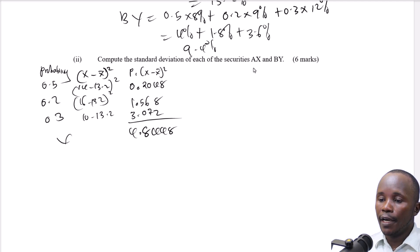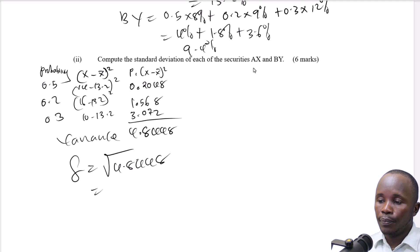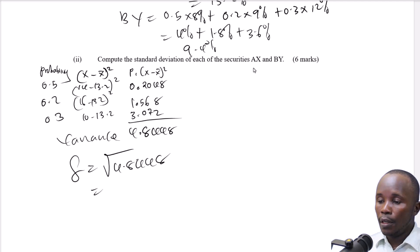The variance for AX is 4.48. Standard deviation is the square root of 4.48, which gives 2.2.